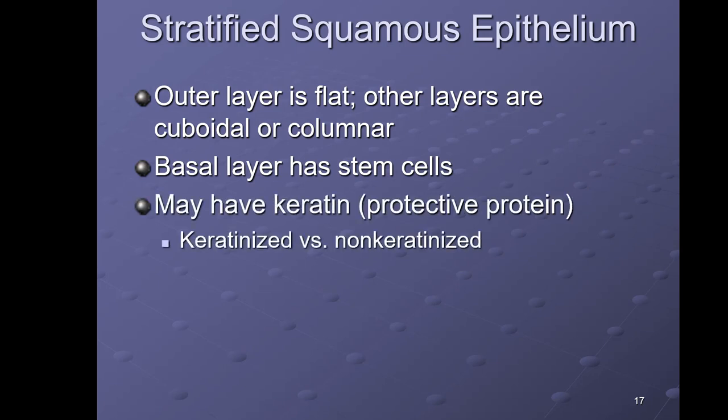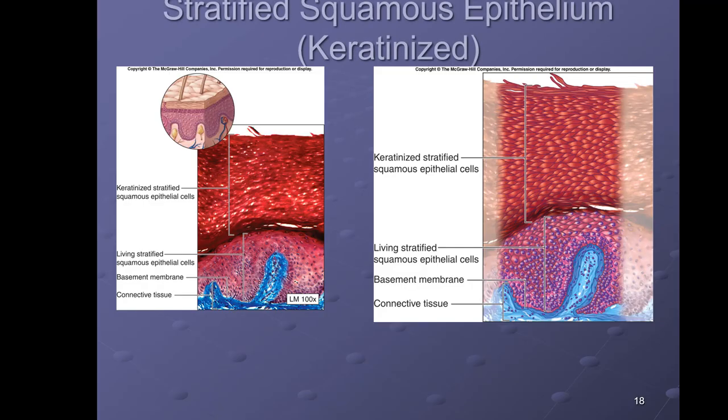Stratified squamous epithelium — multiple layers with the outer layer being flat. The basal layer has stem cells that rapidly divide. A great example of this is the skin, though we have it in a couple of other places in the body too. It may or may not have a protein called keratin, which gives us two subtypes: keratinized stratified squamous and non-keratinized stratified squamous. Keratin is a protein that helps protect the tissue.